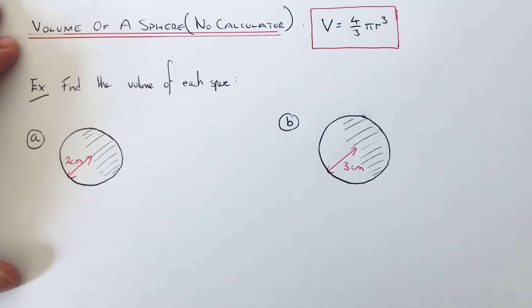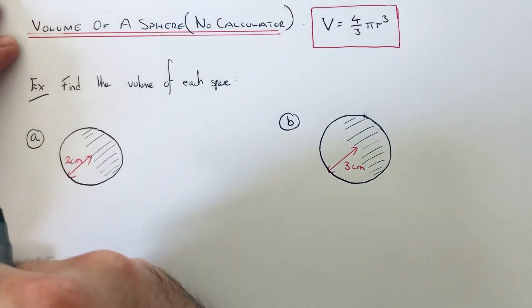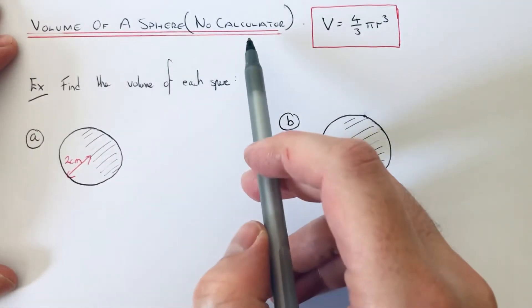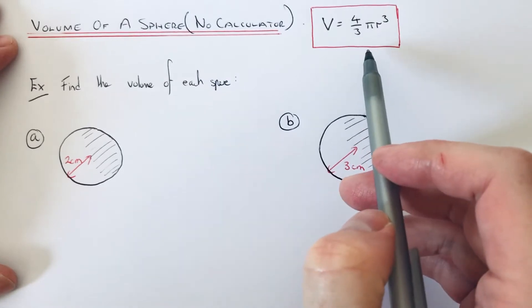Hi guys, welcome back. This is Maths3000. Today I'm going to show you how to work out the volume of a sphere without using your calculator, so you're giving your answer in terms of pi.